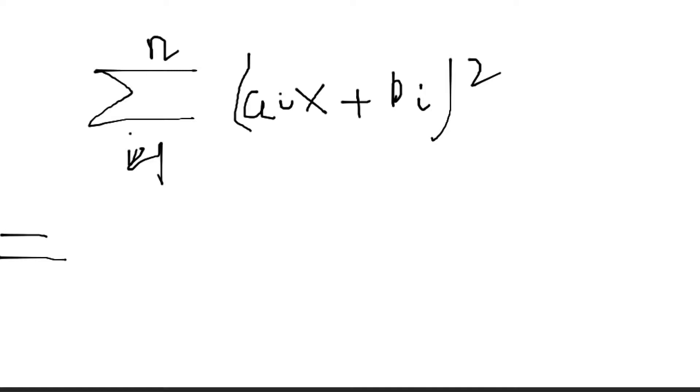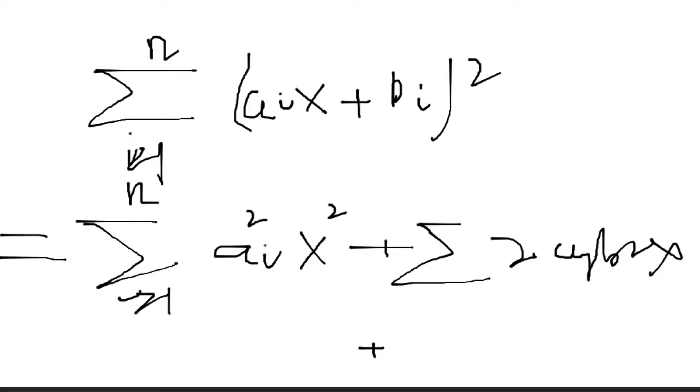Expand this expression, and we can get the sum i equals to 1 till n, a_i squared x squared, plus summation i equals to 1, a_i b_i x, plus the summation of b_i. And from here, we can clearly see that.